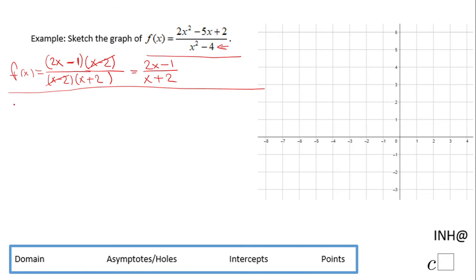Now we can move to the domain. For the domain you're gonna have to take the denominator of your original form, take the factor form since you already have it, and make it equal to 0.